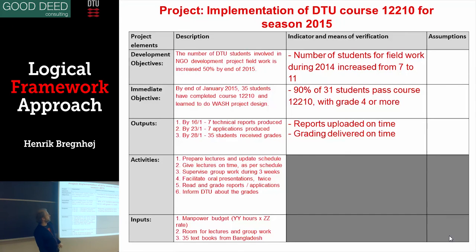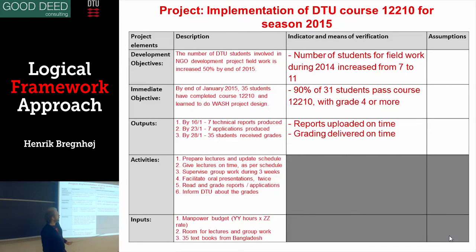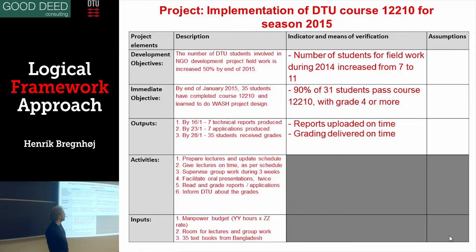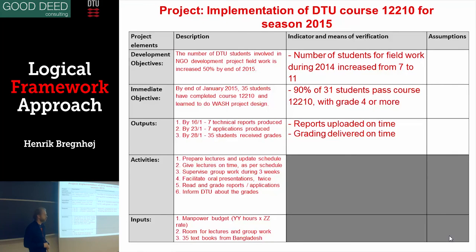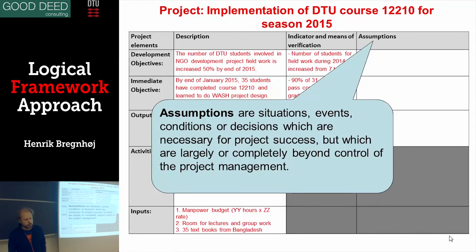For the immediate objective — that students have completed the course and learned to do WASH project design — I would say if 90 percent of the 35 students passed the course with a grade of four or above, then the objective is obtained. That is the indicator. For the development objective, we look at how many students are doing field work: last year it was seven DTU students doing field work on UBOS projects; next year we want to increase that by 50 percent, so we need at least 11.